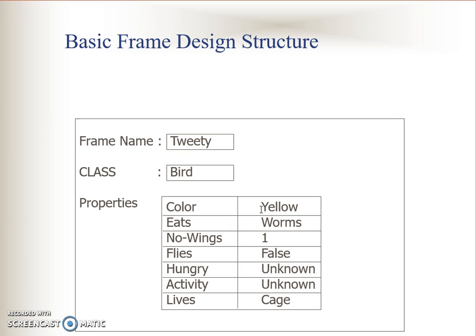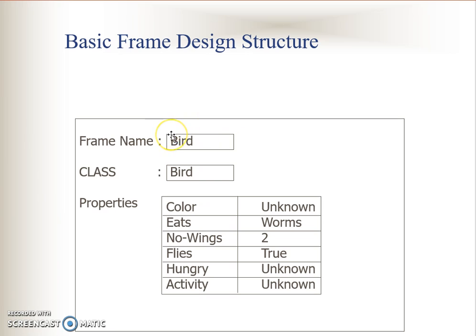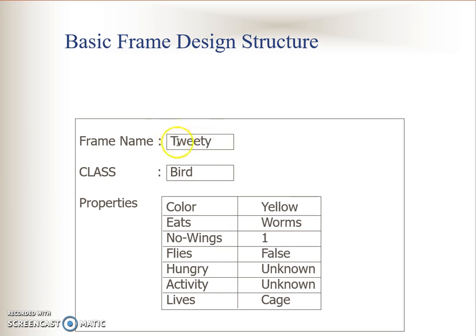Let's look at this example. Tweety is a subclass of bird. Previously you have bird, and the superclass is bird. The subclass is Tweety because the frame Tweety belongs to the class bird. Because it is a subclass, it will inherit the properties from bird: color, eats, number of wings, flies, hungry, and activities. You can also introduce its own properties — for example, this one is 'lives'. So Tweety lives in a cage, meaning Tweety is actually a pet.